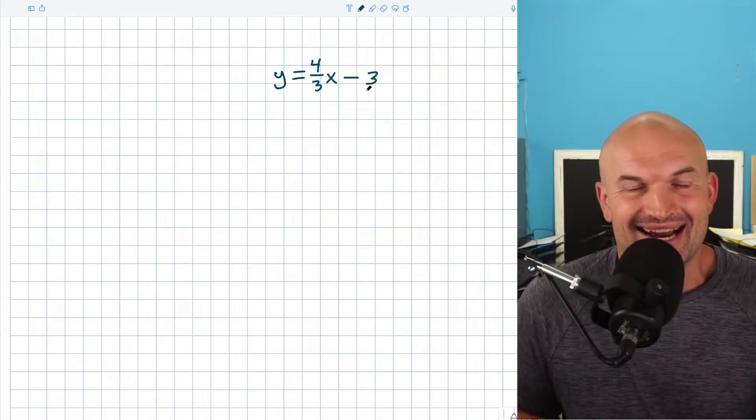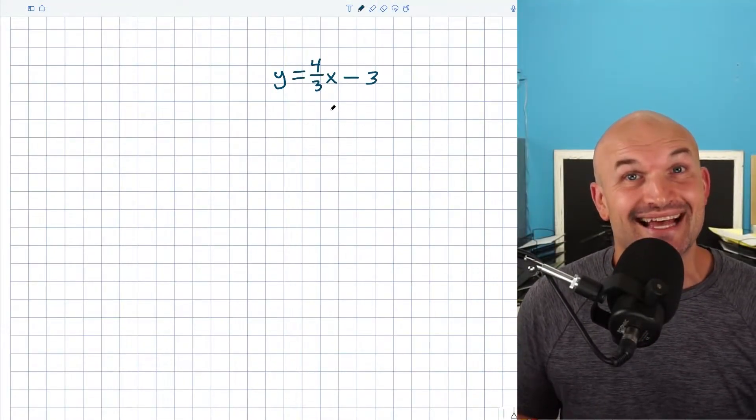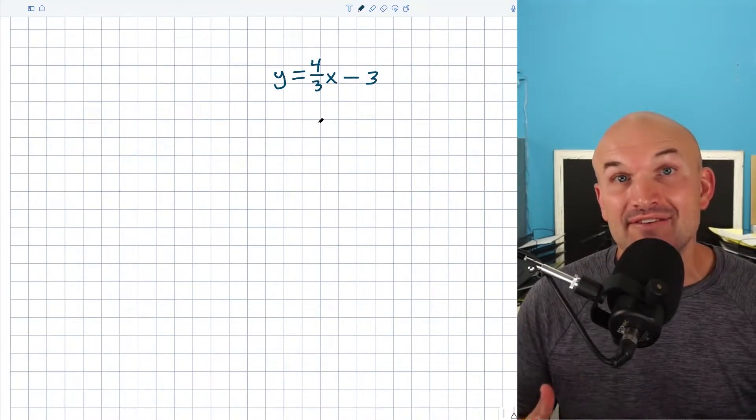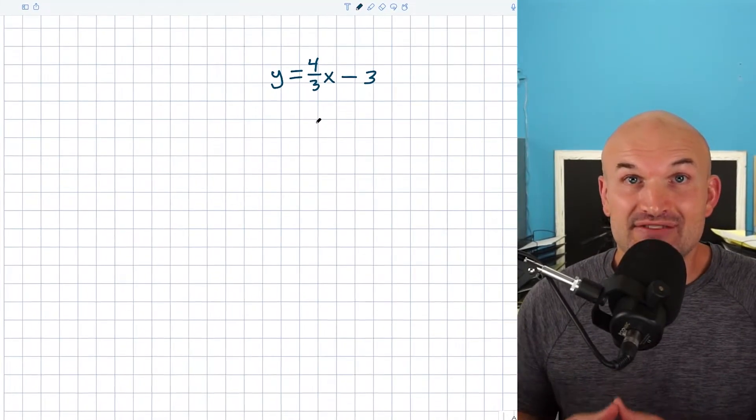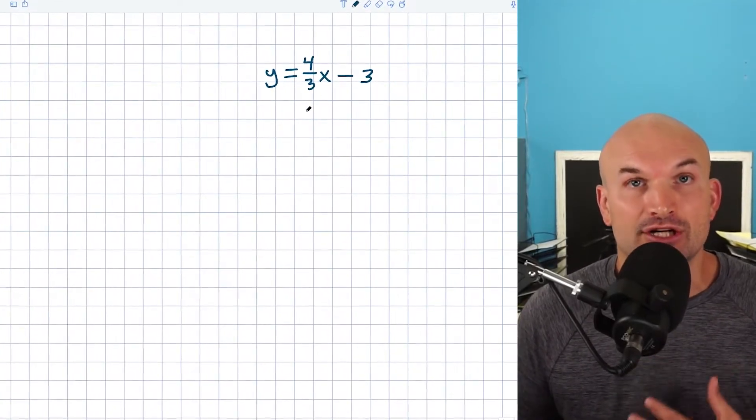Now, you might already look at this problem and say, hey, I already know the y-intercept. That's negative three. That's kind of easy. And yeah, you're right. But what about if you don't have it in slope-intercept form? What I'm about to show you in this video, you can apply no matter what form your linear equation is in.